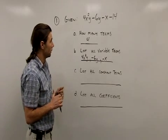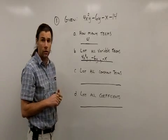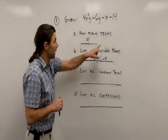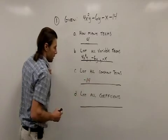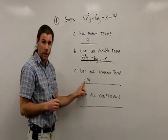Next question, list all constant terms. While constant terms are the ones that don't have any variables in them at all, I have one constant term. So to list that, I just write that. Notice again I include the negative sign on there.